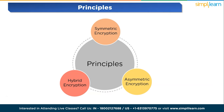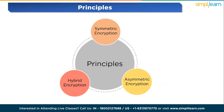Then comes asymmetric encryption. It deploys two keys: a public key known by everyone and a private key known only by the receiver. The public key is used to encrypt the message and the private key is used to decrypt it. Asymmetric encryption is slightly slower than symmetric encryption and consumes more processing power when encrypting data. Then comes hybrid encryption, which blends both symmetric and asymmetric encryption, taking advantage of the strengths of both and minimizing their weaknesses.